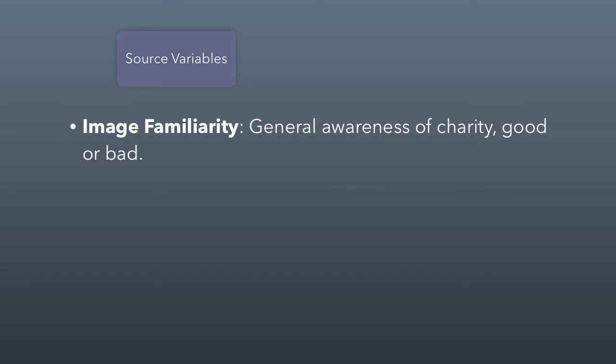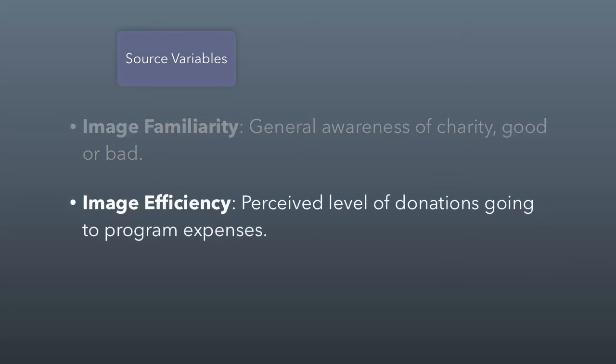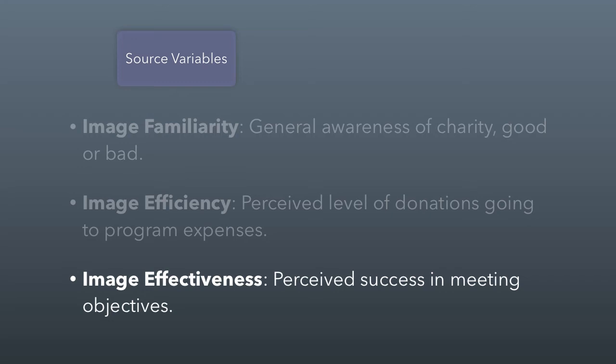The way the reading describes source variables, there are three I want to emphasize. Image familiarity is one of those variables - this is where there's general awareness of your charity, good or bad. Another source variable is image efficiency - this is the perceived level of donations going to program expenses. How much of my dollar actually goes to the charitable program? That's an efficiency message of image, and it has to do with who you are as a source of this message. And then there's image effectiveness, which is the perceived success in meeting objectives. So this isn't so much about efficiency of dollar spent, more about impact of dollar spent - what difference is being made in the world.